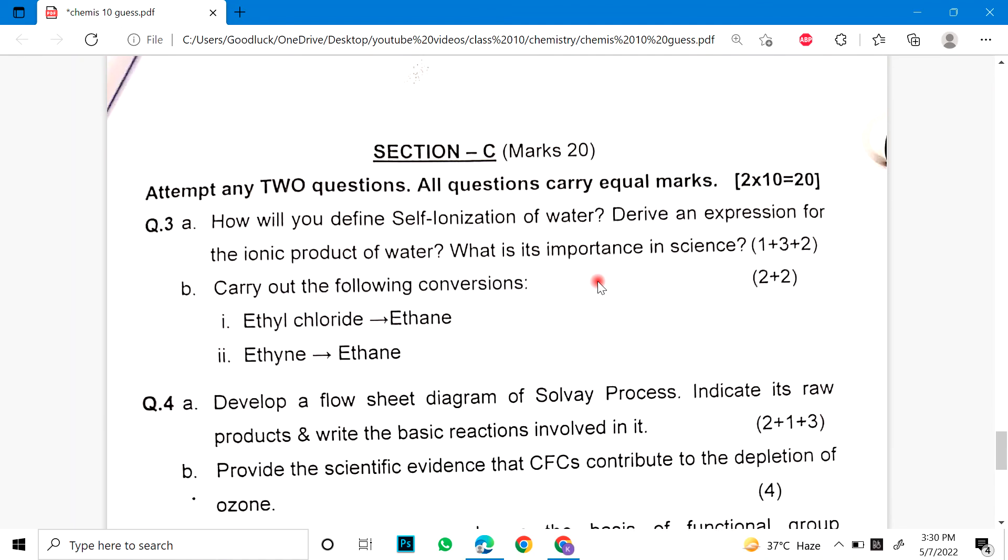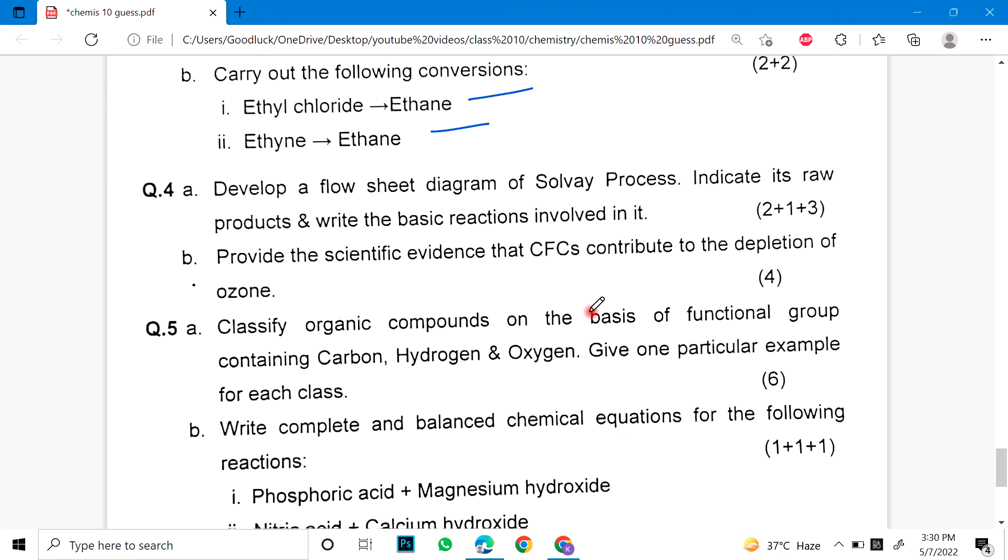Part C. You have to have Section C. Question number 3. Part A. How will you define self ionization of water? Derive an expression for the ionic product of water. What is its importance in science? And carry out the following conversions. Question number 4. Develop a flow sheet diagram of Solvay process, indicates its draw product and write basic reactions involved in it. Marks according, you have to write its answer.